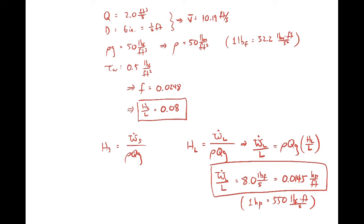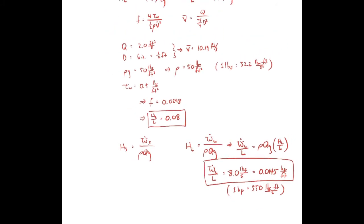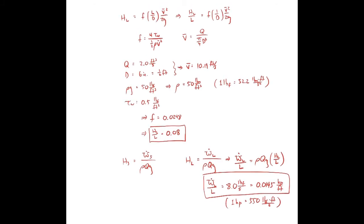This problem is tricky because it requires recalling specific definitions. For Part A, the key is knowing major head loss in terms of the friction factor, and recognizing that the friction factor is a dimensionless wall shear stress. For Part B, it's about relating a head quantity to a power quantity, analogous to the shaft head term but applied to head loss. The other main challenge is handling English unit conversions between pounds force, pounds mass, and horsepower.